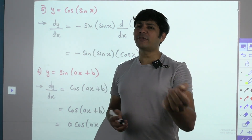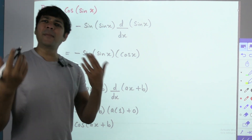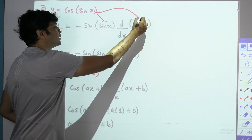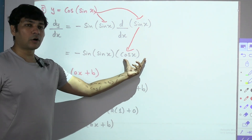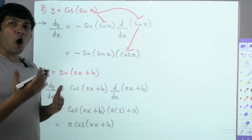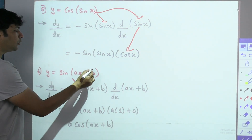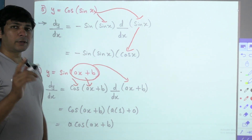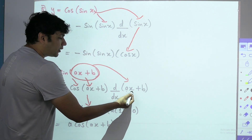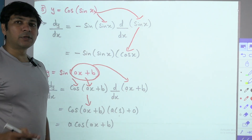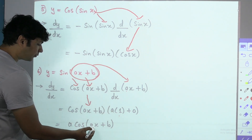Fifth question: y = cos(sin x) — a 2-level chain problem. Cos of whatever is in the bracket differentiates to −sin of whatever is in the bracket, since we differentiate the bracket separately. Into differentiation of sin x, which is cos x. The answer is −sin(sin x) · cos x. Sixth question: y = sin(ax + b). Sin of whatever is in the bracket differentiates to cos of whatever is in the bracket. Into differentiation of (ax + b): a·1 = a, and b is a constant so becomes 0. Answer is a·cos(ax + b).